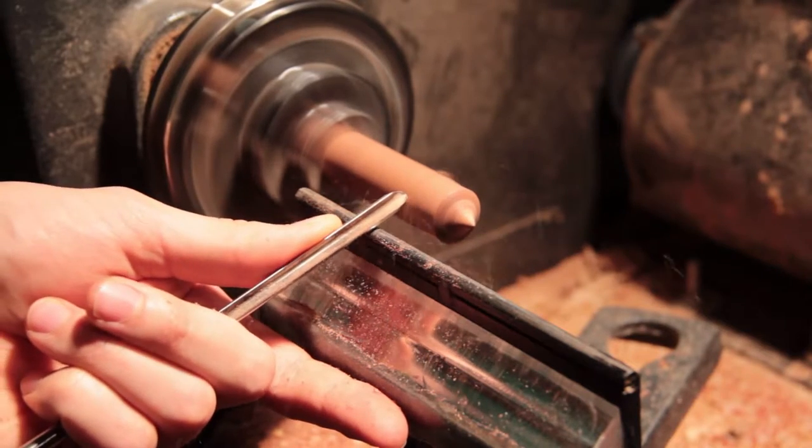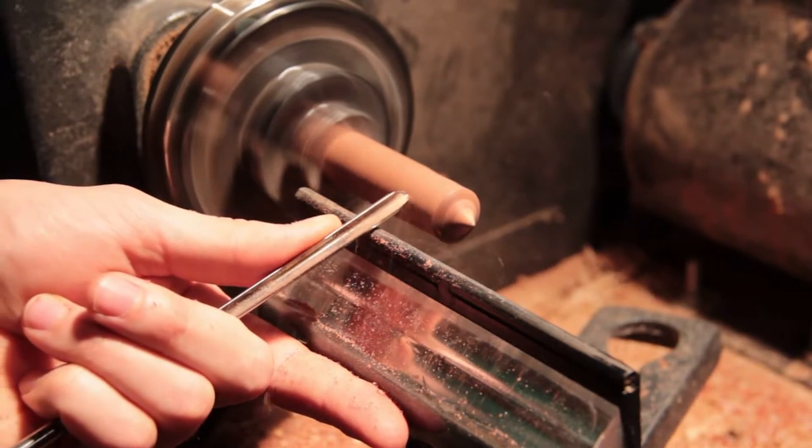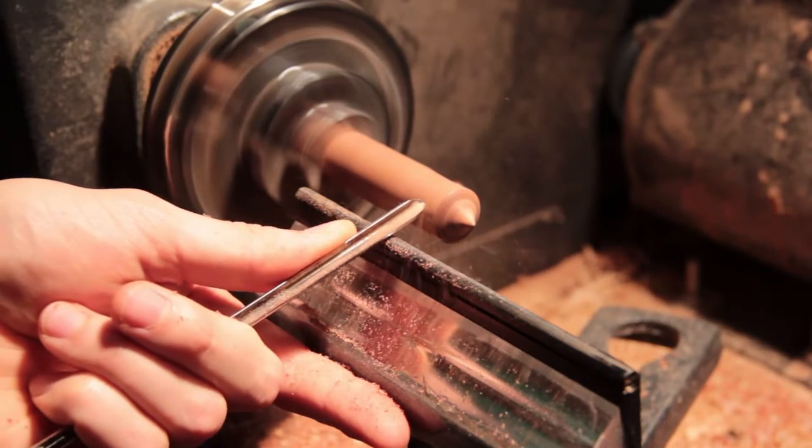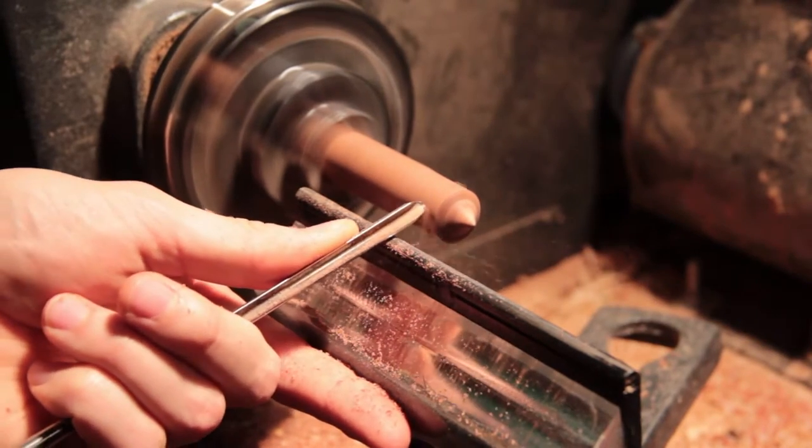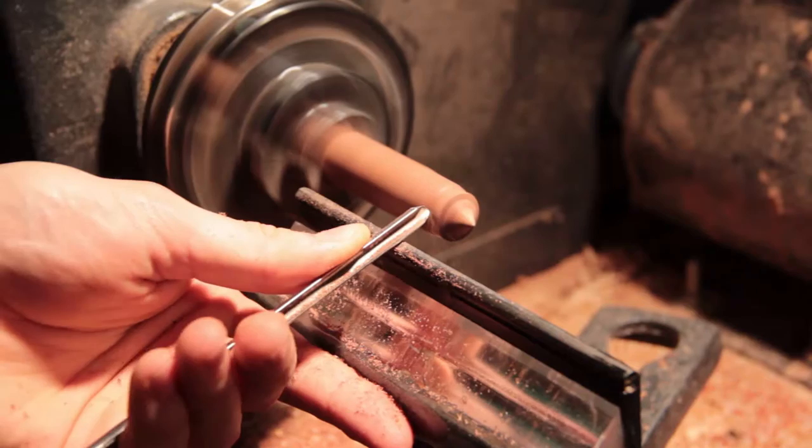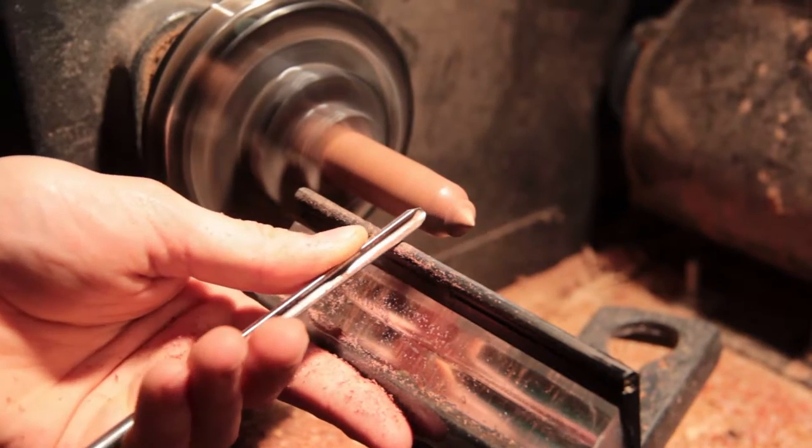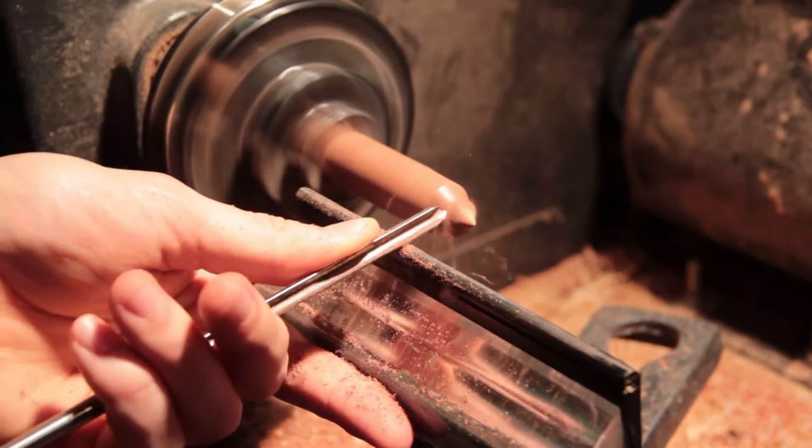I'm going to make almost the whole top here using a detail gouge, this is a pretty small chisel. This first set of passes here, I'm just bringing the wood into round because it's never going to be perfectly aligned in the chuck to start with.